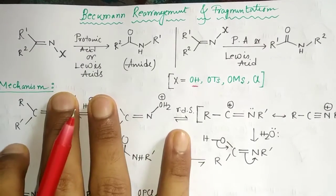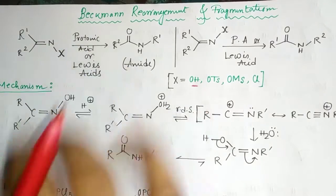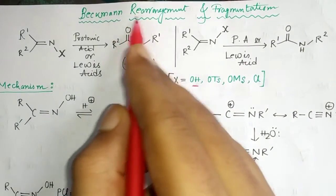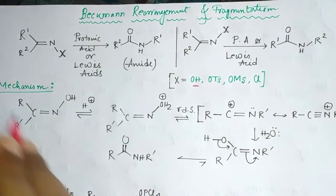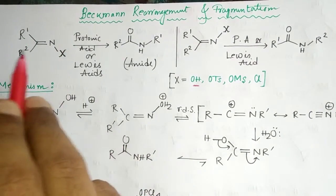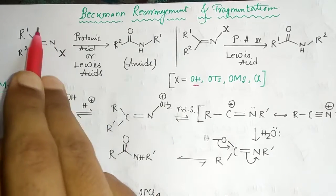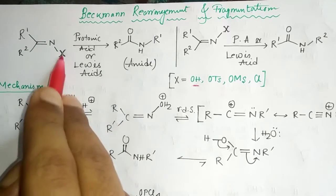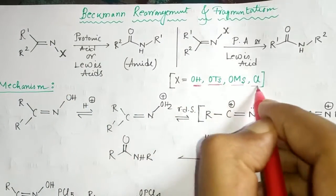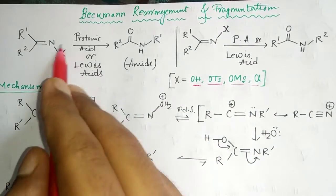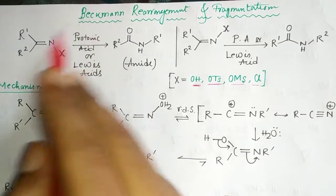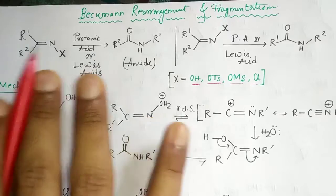We will see the compounds involved in Beckmann rearrangement, the reagents used, and what kind of product is formed. Since it is a rearrangement, there is a kind of rearrangement taking place. The compound involved has X attached to the nitrogen, where X may be OH, OTs, OMs, or Cl. If you don't have a leaving group, you cannot undergo this rearrangement reaction.